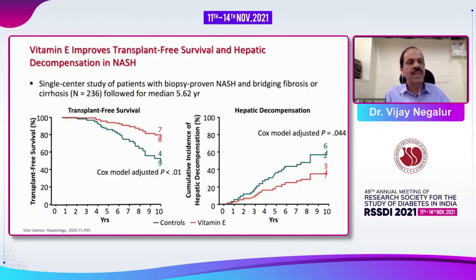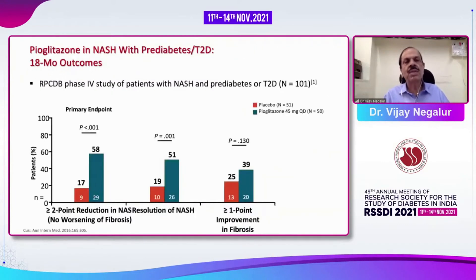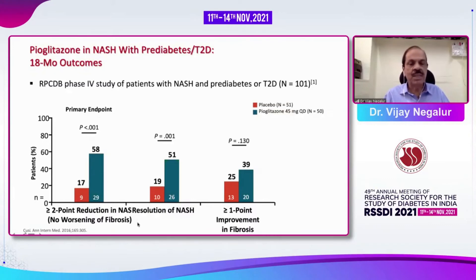Vitamin E data shows significantly better transplant-free survival and improved hepatic decompensation in patients followed up for 10 years. A randomized placebo-controlled double-blind trial with pioglitazone at 45 mg in 101 patients showed a two-point reduction in NASH activity score, resolution of NASH, and one-point improvement in fibrosis — with significant data on two-point NASH reduction and no worsening of fibrosis.